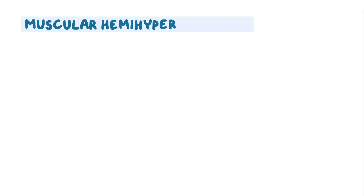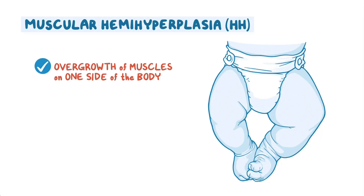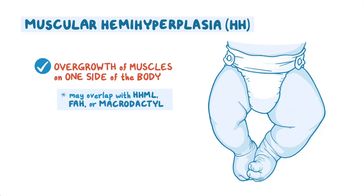Muscular hemihyperplasia, or HH, causes an overgrowth of muscles on one side of the body, so may overlap with HHML, FAH, and macrodactyly. HH is usually present at birth.